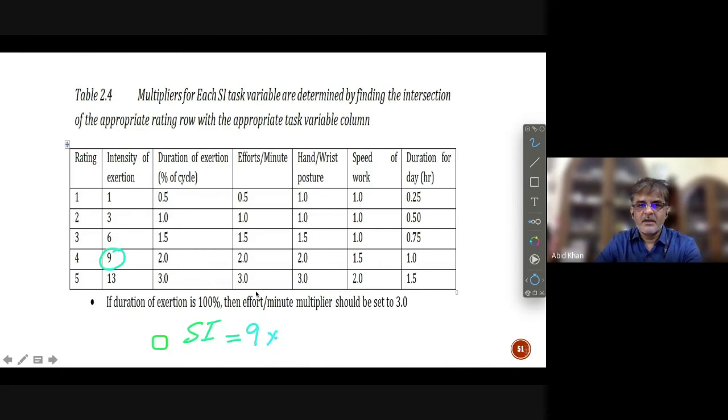When duration of exertion of cycle is supposed 10% of the cycle time, so we will go for 0.5. If efforts per minutes are 4 or less, then we will go for 0.5. If the posture is in neutral way or slightly awkward, then you can go for 1. Then if speed of work is moderate, we can go for 1.